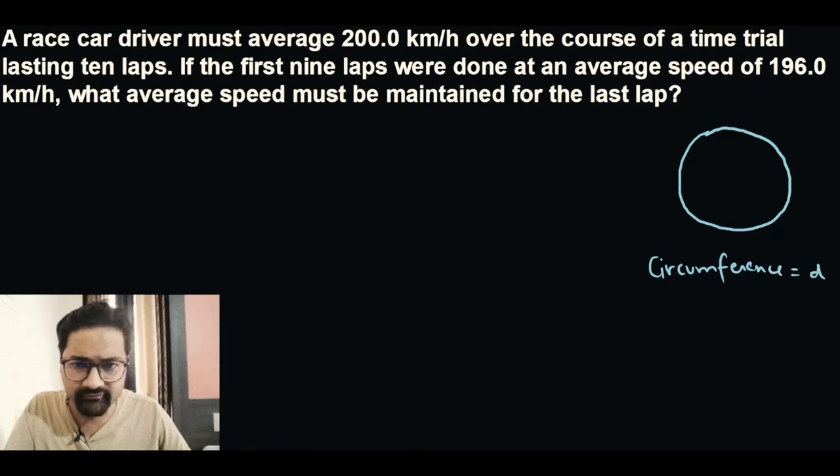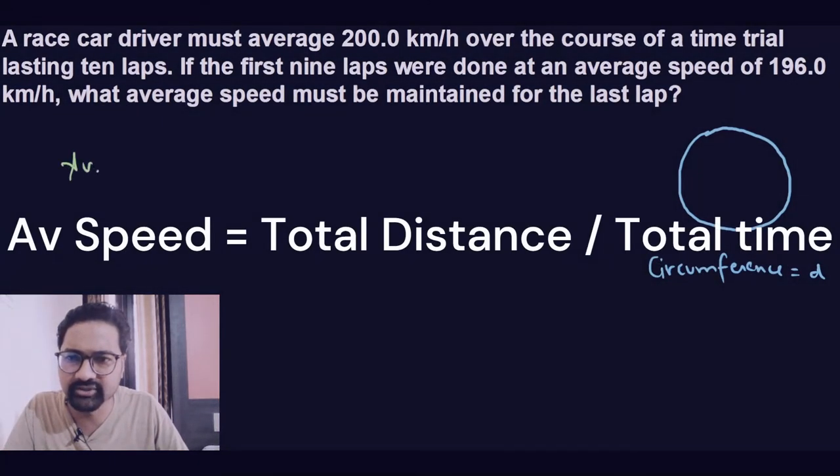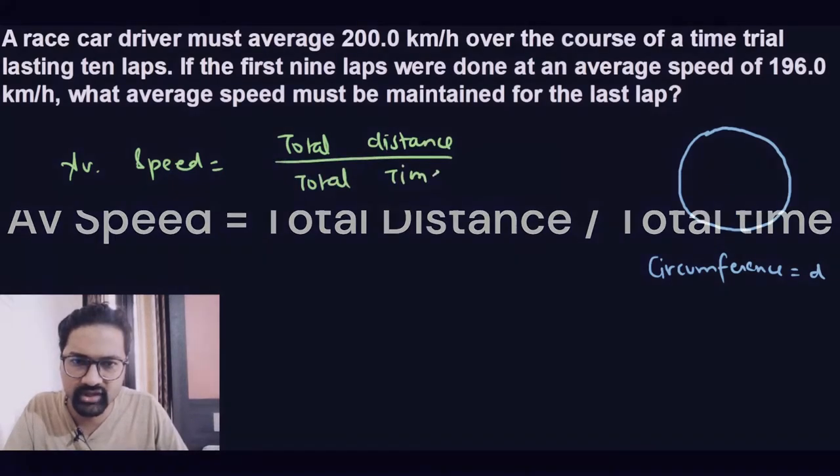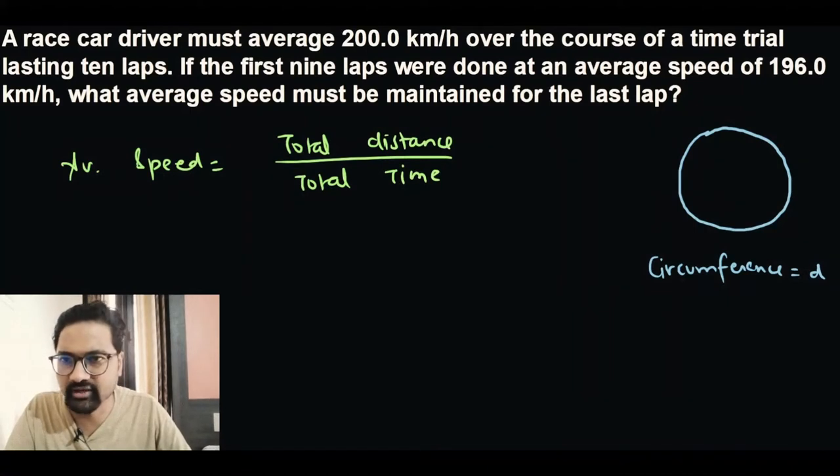We know for a fact that the average speed is actually equal to the total distance over the total time. Now there are two cases over here which we have to take into account.